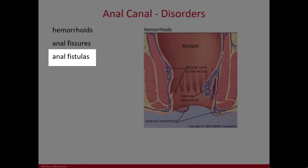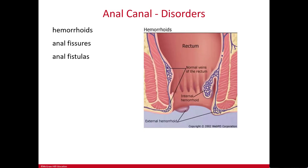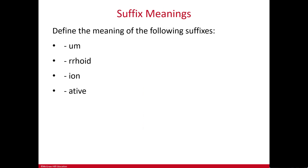Anal fistulas are holes where holes are not supposed to be. They can occur following an abscess in the anal glands — glands that secrete mucus to lubricate the canal. If those glands become infected, an abscess forms, and if that abscess ruptures, a fistula or abnormal hole can form between the anal canal and the skin outside the anus.